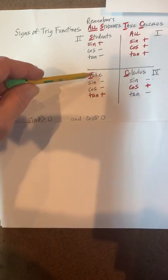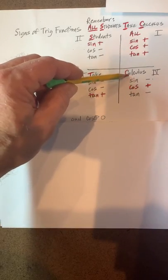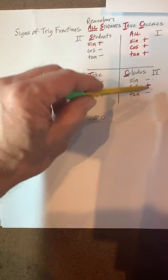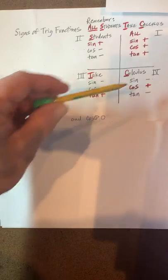In the third quadrant, take, just tan is positive. In the fourth quadrant, C, cos, just cosine is positive.